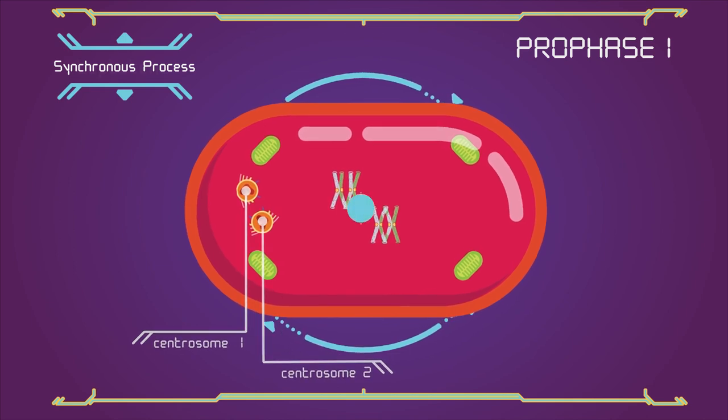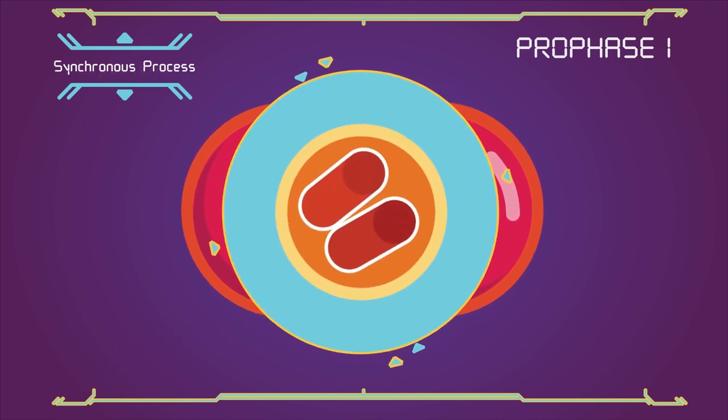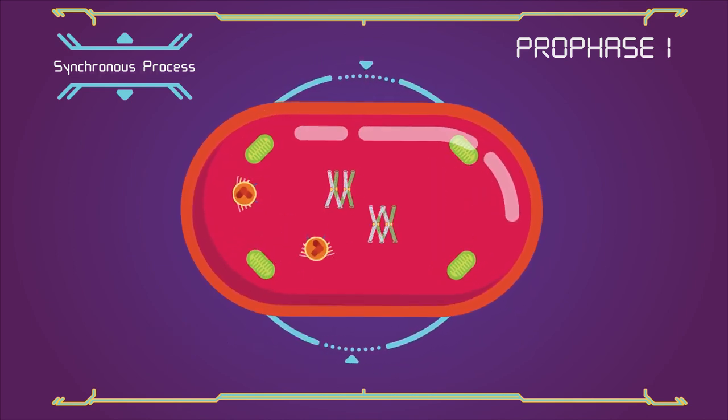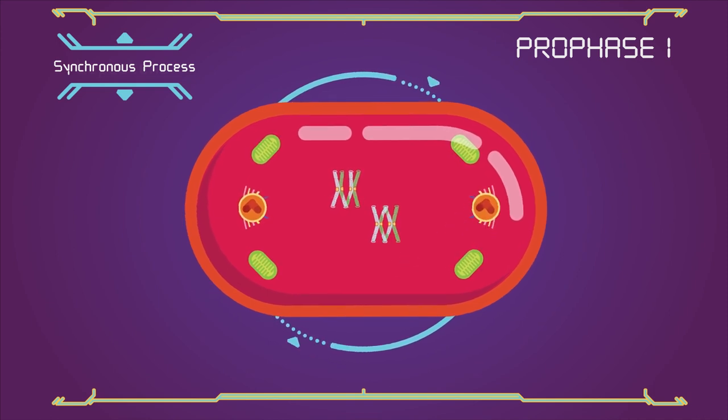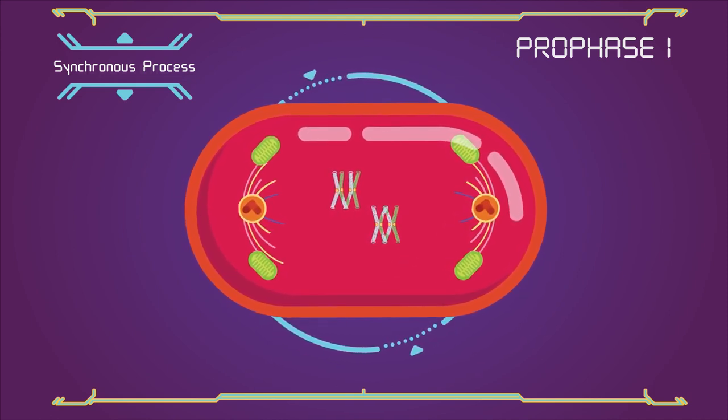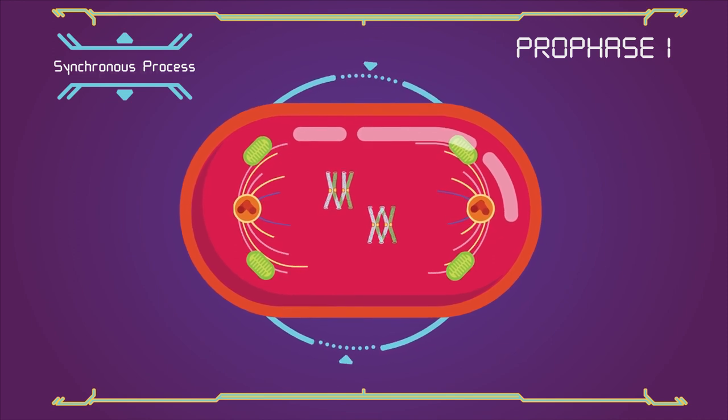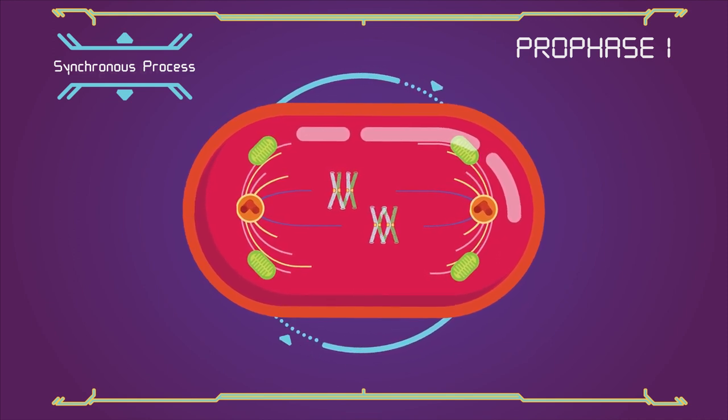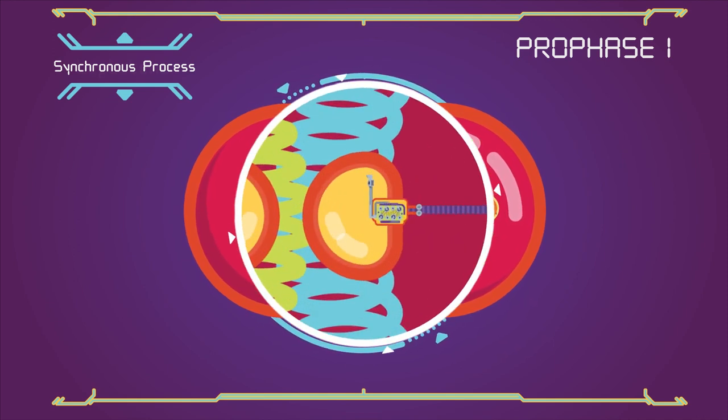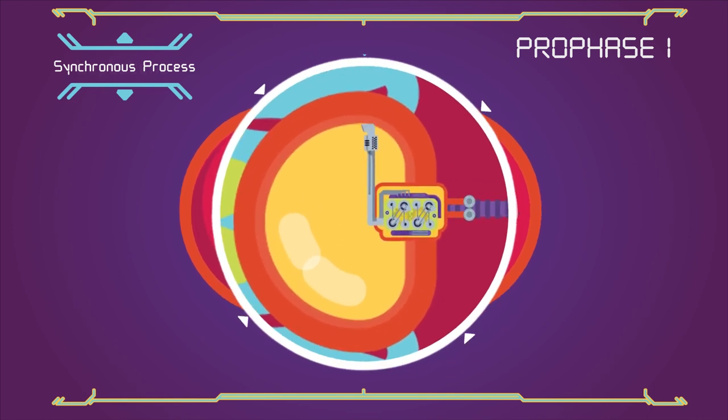During these stages, two centrosomes, containing a pair of centrioles in animal cells, migrate to the two poles of the cell. The microtubules invade the nuclear region after the nuclear envelope disintegrates, attaching to the chromosomes at the kinetochore. The kinetochore functions as a motor, pulling the chromosomes along the attached microtubule.